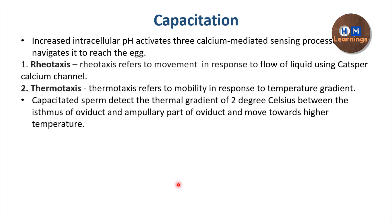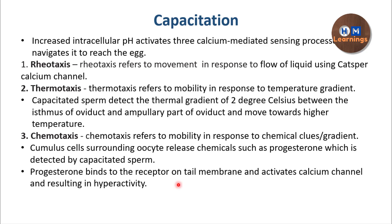Next, the sperm can follow thermotaxis — it senses a temperature gradient and moves towards higher temperature. Between the isthmus and ampulla portions of the fallopian tube, the ampulla is 2 degrees Celsius hotter than the isthmus, so the sperm senses that temperature difference and moves towards the ampulla. This sensing is possible because of capacitation. Third is chemotaxis: certain chemicals released by the oocyte or surrounding cells bind to the sperm and activate calcium channels. These three calcium-sensing mechanisms ensure the sperm navigates and reaches the ovum.